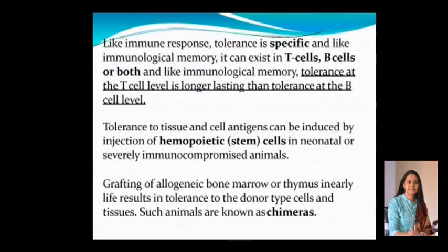Like immune response, tolerance is very specific, and like immunological memory, it can exist in T cells, B cells, or both. Like immunological memory, tolerance at the T cell level is longer lasting than tolerance at the B cell level. Tolerance to tissue and cell antigens can be induced by injections of hematopoietic cells — that is, stem cells — in neonatal or severely immunocompromised animals. Grafting of allogenic bone marrow or thymus in early life results in tolerance to the donor type cells and tissues. Such animals are called chimeras.